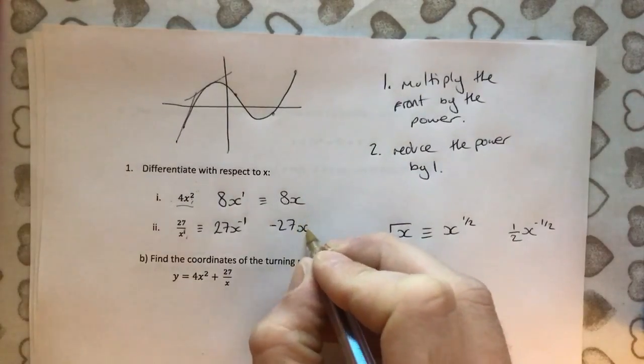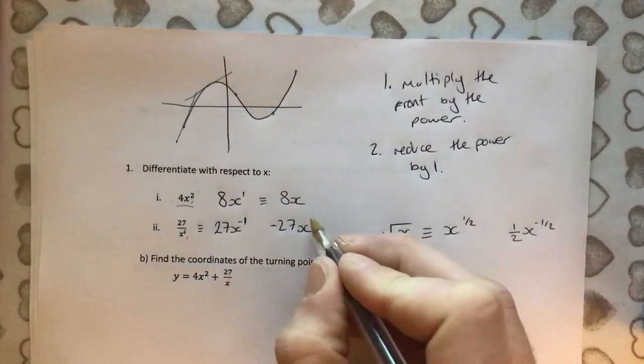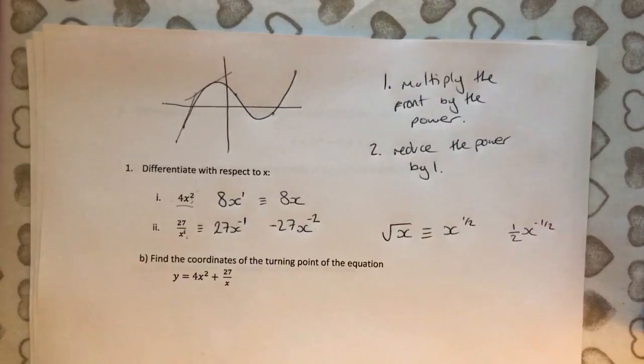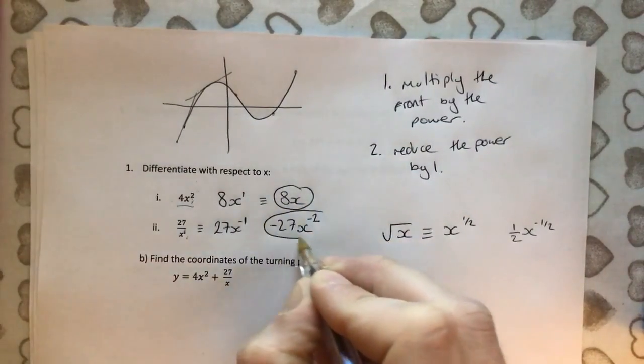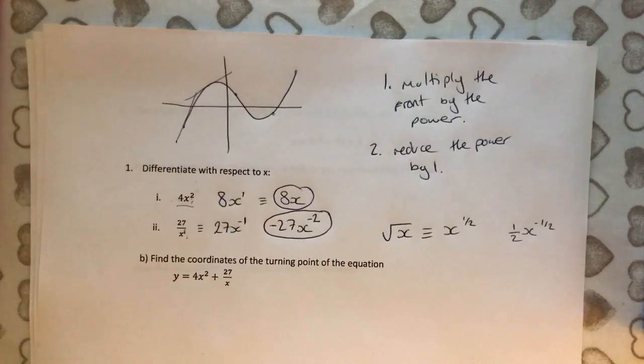And then just be careful here because when we reduce the power by 1, it goes to minus 2. It gets more negative. Don't be tempted to go to 0. We're reducing so it gets more negative. So here are the two differentiated expressions.